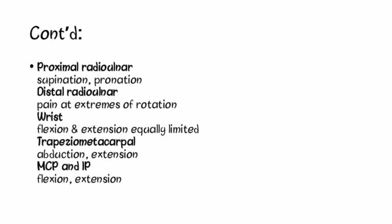At the proximal radio-ulnar joint, supination is more restricted than pronation. At the distal radio-ulnar joint, there is pain at extremes of rotation. At the wrist, flexion and extension are equally limited. At the trapezio-metacarpal joint, abduction is more limited than extension. At the metacarpophalangeal and interphalangeal joints, flexion is more limited than extension.